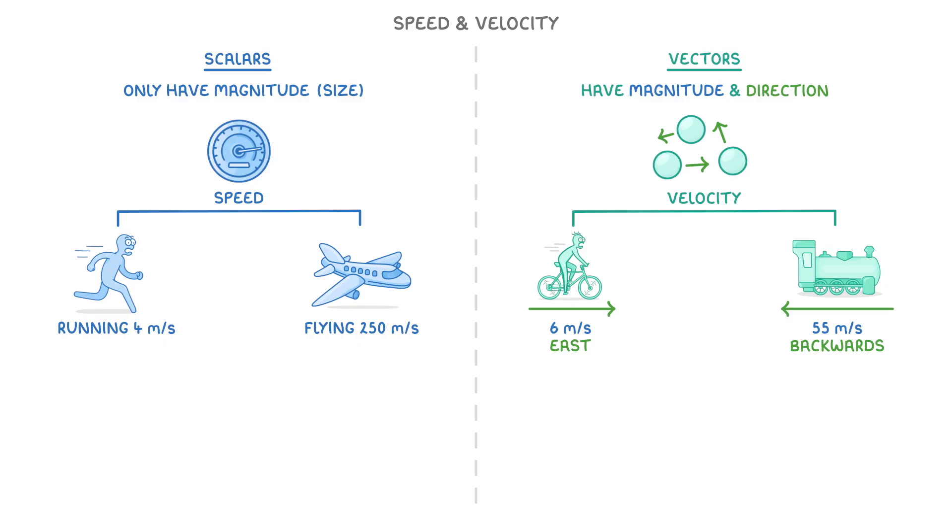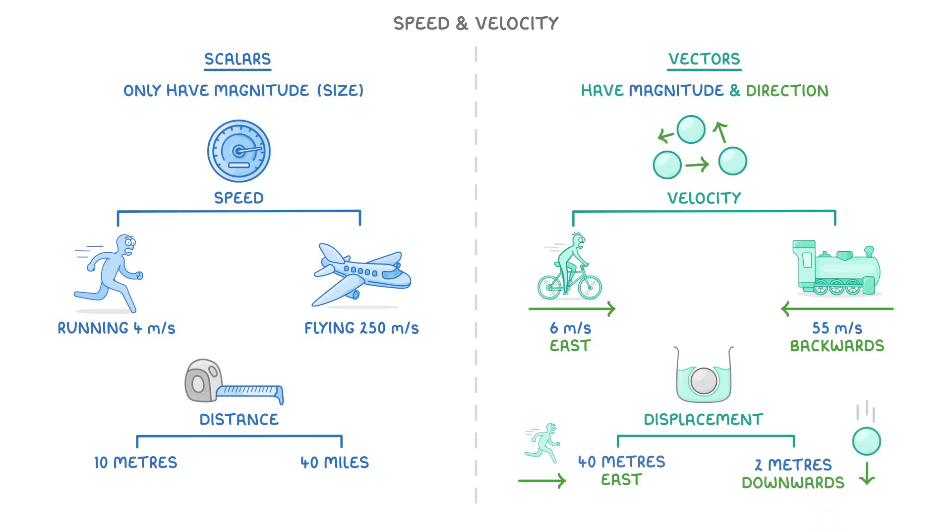Another pair of quantities you need to know are distance and displacement. Distance is a scalar, as it only gives magnitude, like 10m or 40m. Displacement though is a vector, as it has direction as well. For example, a person running 40m east, or a ball that falls 2m downwards.